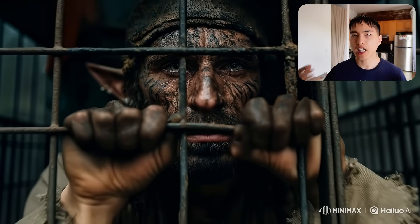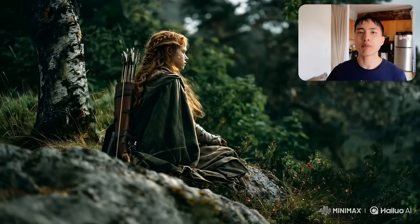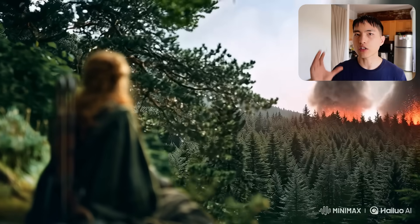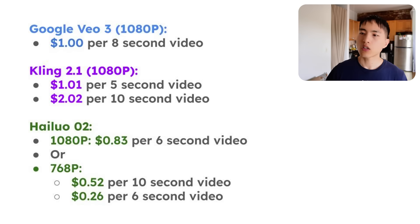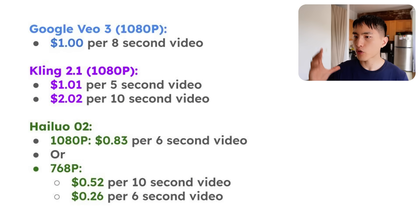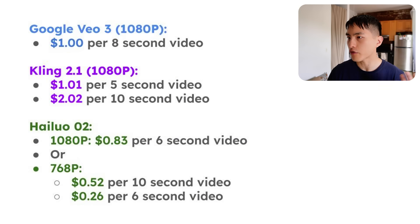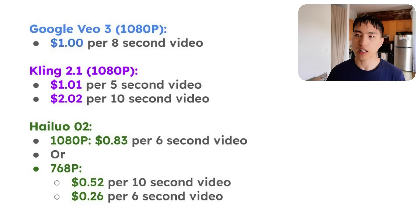There are so many different ways we can use these camera motions in Hailuo — you can get super creative with it. Based on what I've seen, I really do think Hailuo's O2 model is the best image-to-video model out there right now. Now, looking at the price compared to other platforms: Google Veo 3 costs a dollar per video for their 8-second videos. If we use the highest quality Kling 2.1 model, it'll cost around a dollar for a five-second video or $2 for a 10-second video at full HD resolution. If we use Hailuo, it is cheaper than the other platforms at around 83 cents per video at 1080p for six-second videos, or if you use the lower resolution mode at 768p, it's 52 cents for a 10-second video or 26 cents for a 5-second video.